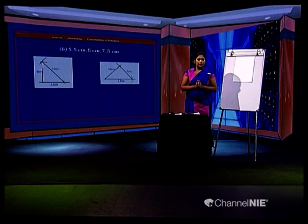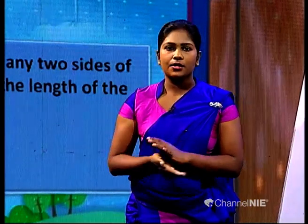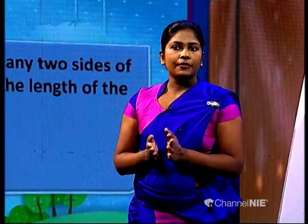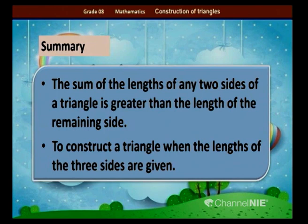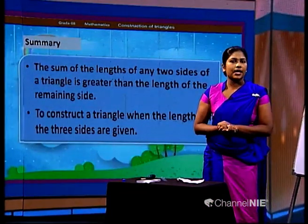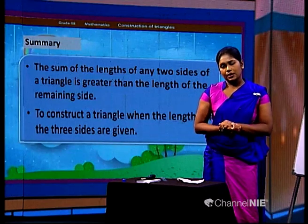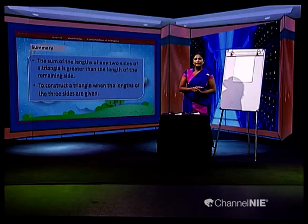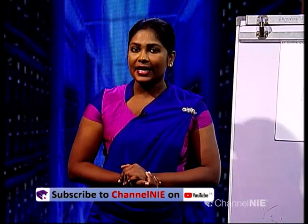Today we did some constructions. To summarize: the sum of the length of any two sides of a triangle is greater than the length of the remaining side, and we learned to construct triangles when the lengths of three sides are given. We discussed the conditions of triangles. I hope you can understand this lesson. If you want to watch again, there is a YouTube channel — NIE. Goodbye.